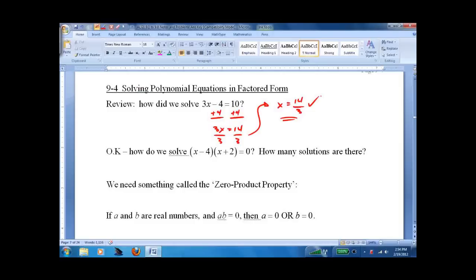So how do we solve (x minus 4)(x plus 2) equals 0, because there are two x's now? How many solutions are there going to be? Well, now we're actually going to have two solutions, which is definitely different from before when we only had one solution.